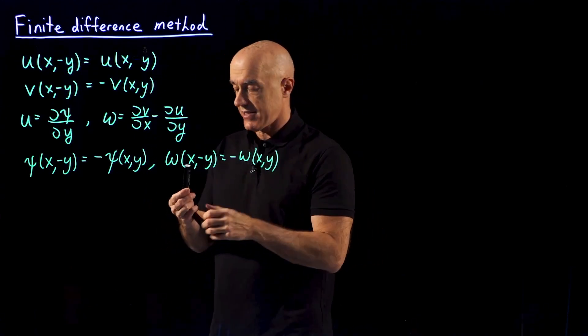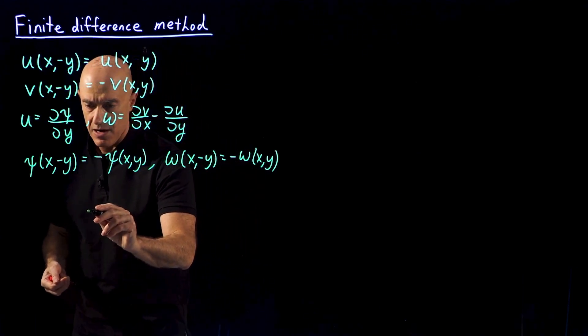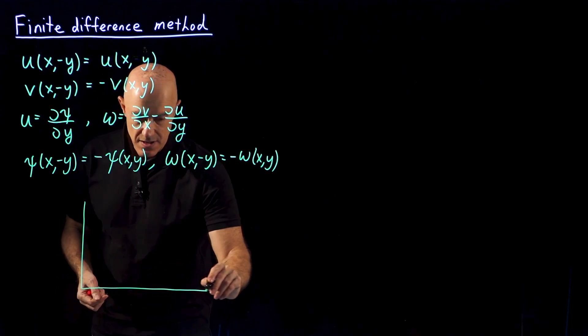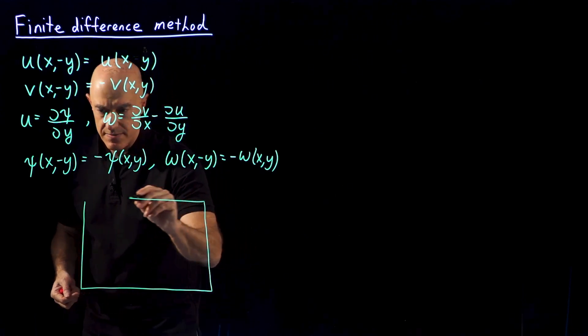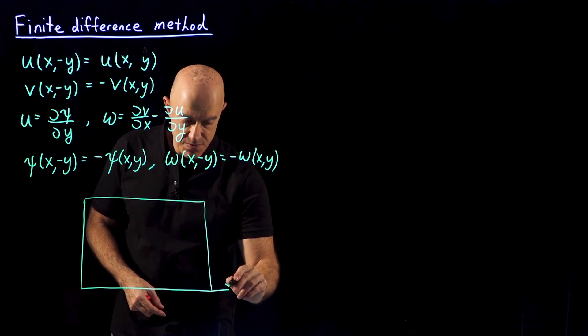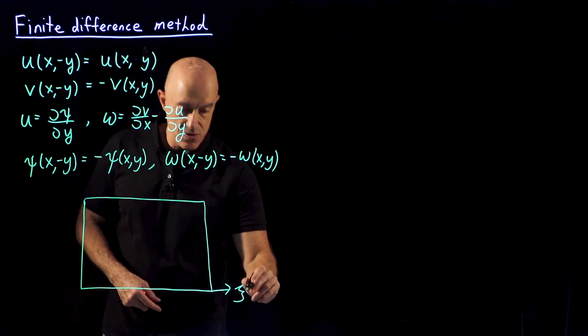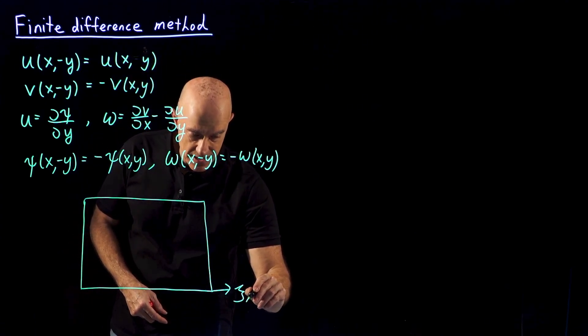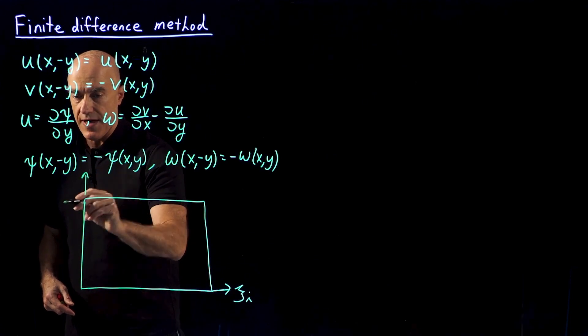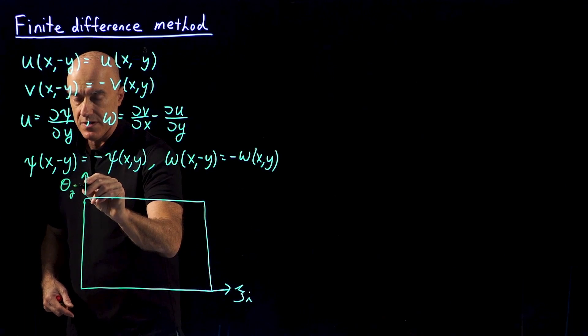Let's now set up our grid. We're going to have a square or a rectangle that we're solving on. This will be our ξ coordinate, I will mark this by subscript i. This will be our θ coordinate, I'll mark this by subscript j.